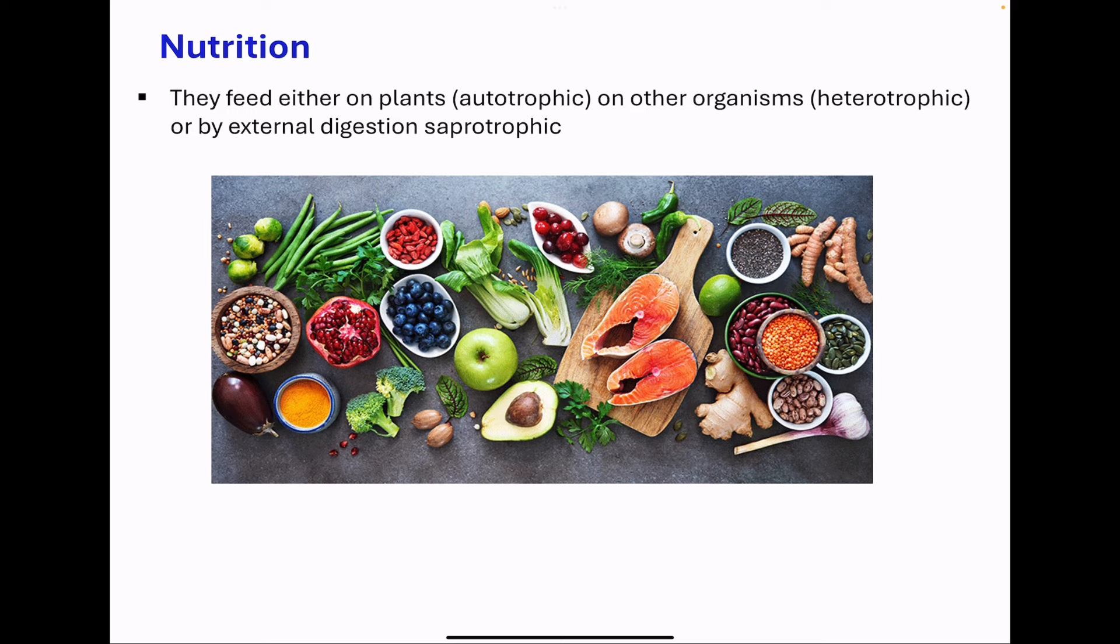All living things carry out nutrition. Plants are autotrophic, so they get their source of carbon from carbon dioxide in the atmosphere with the help of sunlight. Other organisms could be heterotrophic, meaning those that feed on the autotrophs, feeding on plants or other animals.